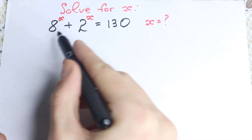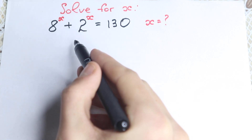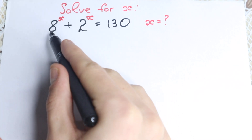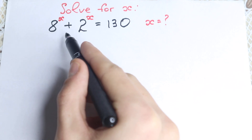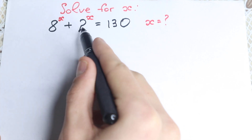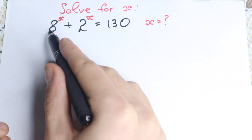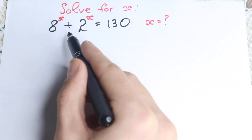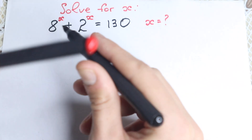First of all we have all different bases — as you can see: 8, 2, and 130. So nothing common between these numbers. Maybe between 8 and 2 we can find a common thing, but between 130, 2, and 8 this is really a bad moment. But take a look closely — we have 8 and 2, and as I said we can find one common thing, because 8 can be written as 2 cubed.